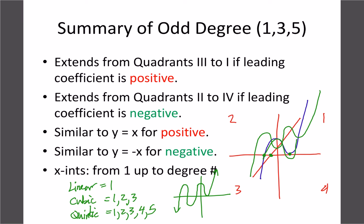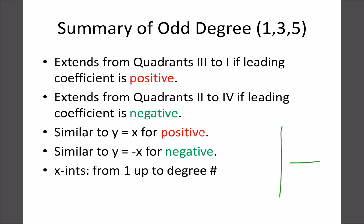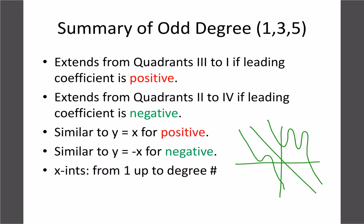If it's a negative function, the exact same thing applies except the direction is opposite — going from quadrant two down to quadrant four. A negative linear is a straight line downward; a negative cubic has one bend; a negative fifth degree has two bends. The main thing to be careful of is whether it's positive or negative to figure out which way it goes.